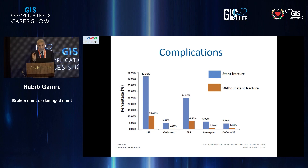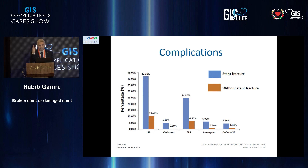Stent fracture is associated with a higher incidence of cardiovascular events, including in-stent restenosis, occlusion, TLR, coronary aneurysm, and stent thrombosis. So if you have it, you have to fix it — otherwise you will have more incidence of cardiovascular events.